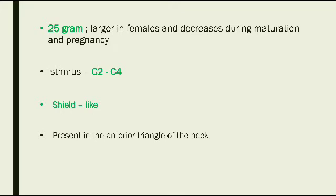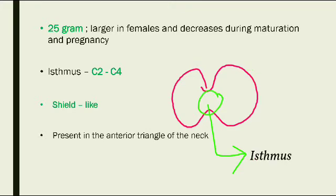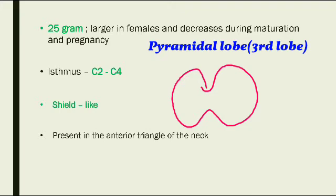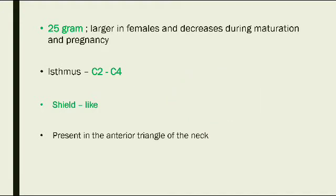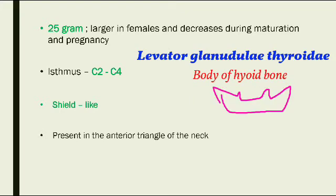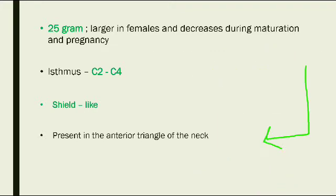This shield-like thyroid gland is divided into right and left lobes, connected by an isthmus. This isthmus lies at the C2 to C4 position. There is also a third lobe called the pyramidal lobe, which may project upwards from the isthmus or from the right or left lobes. There is sometimes a fibrous band called the levator glandulae thyroidea that descends from the body of the hyoid bone to the isthmus or to the pyramidal lobe.